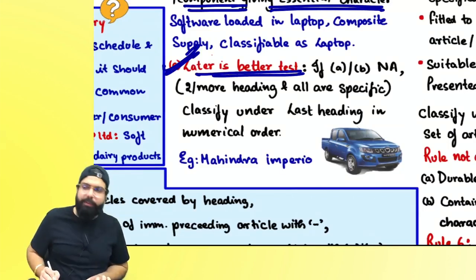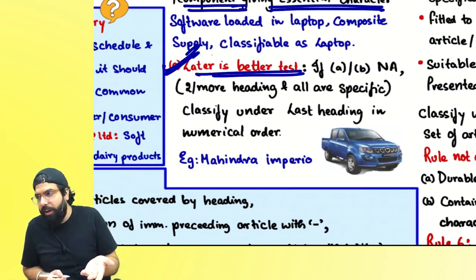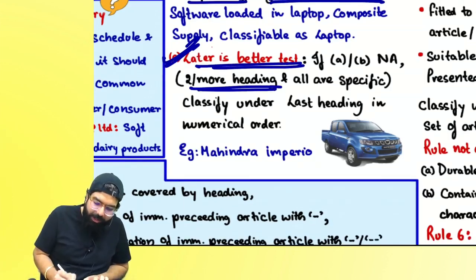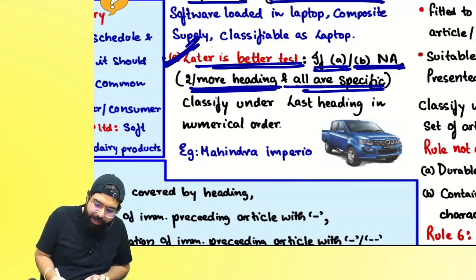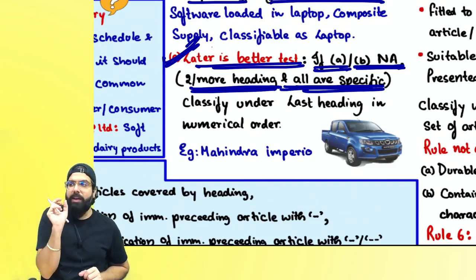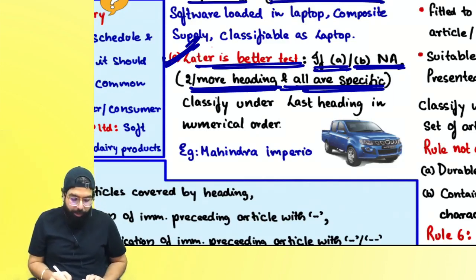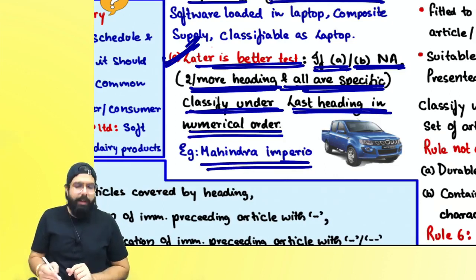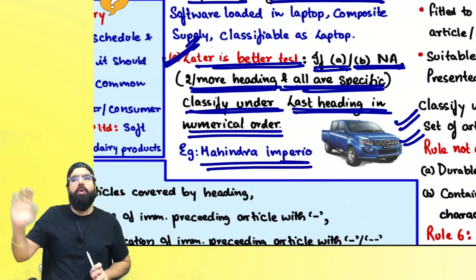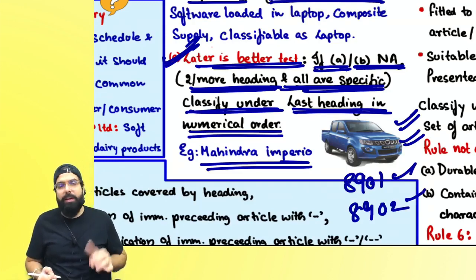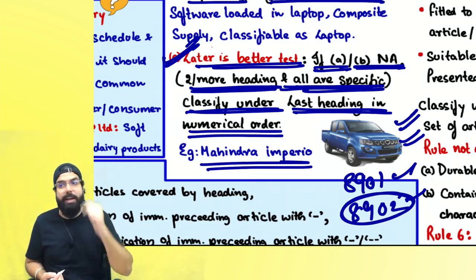The next test is the 'later the better' test. If after applying specific-over-general or essential character test, an item is still classifiable under two or more headings and all are equally specific, then classify under whichever heading comes last in numerical order. For example, Mahindra Imperio can be used for passenger transportation and goods transportation. If it is classifiable under heading 8901 and 8902, you take the later heading — the later heading is always the better heading.